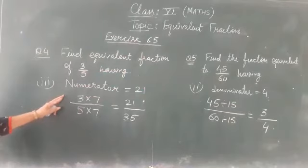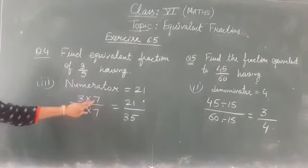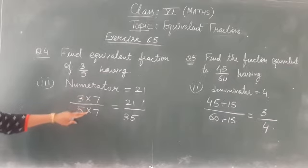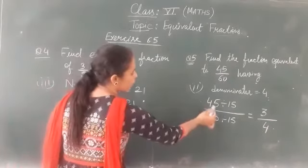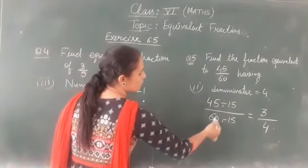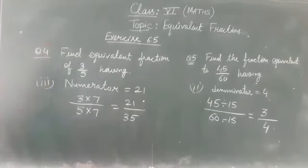It means equivalent fractions can be obtained by multiplying numerator and denominator by the same number or dividing numerator and denominator by the same number. By division also you can get the equivalent fraction. By multiplication also you can get the equivalent fractions.